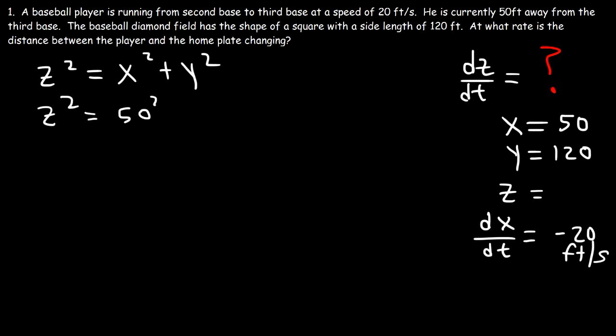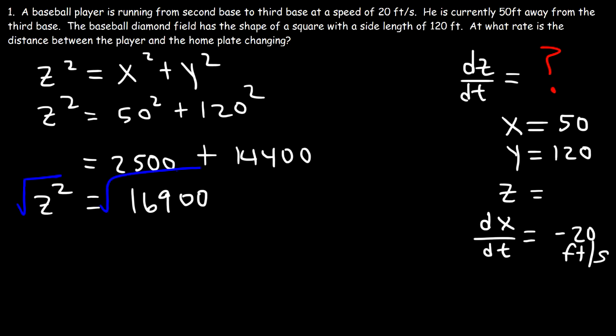x is 50, y is 120. 50 squared is 2500, and 120 times 120 is 14,400. Now if we add these two numbers, this will give us 16,900, and that's equal to z squared. Let's take the square root of both sides to get z. So z is 130 feet.